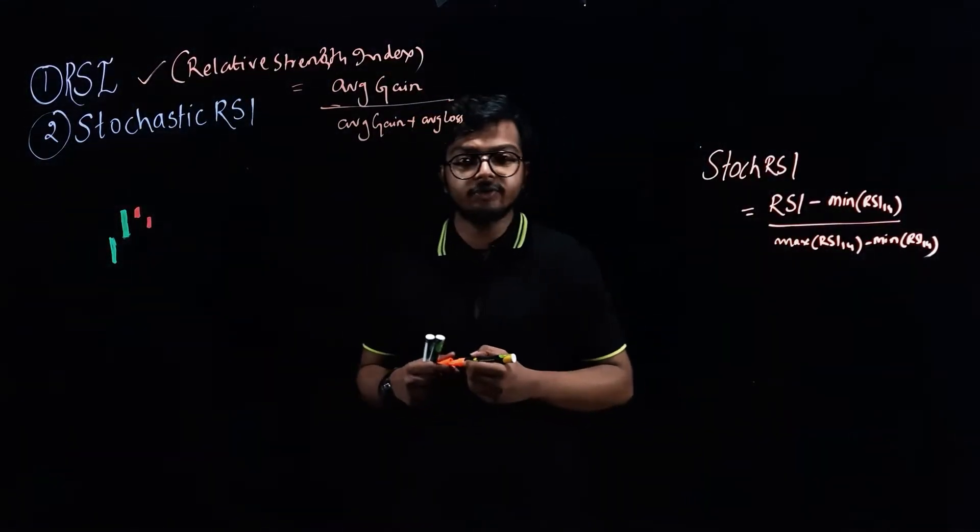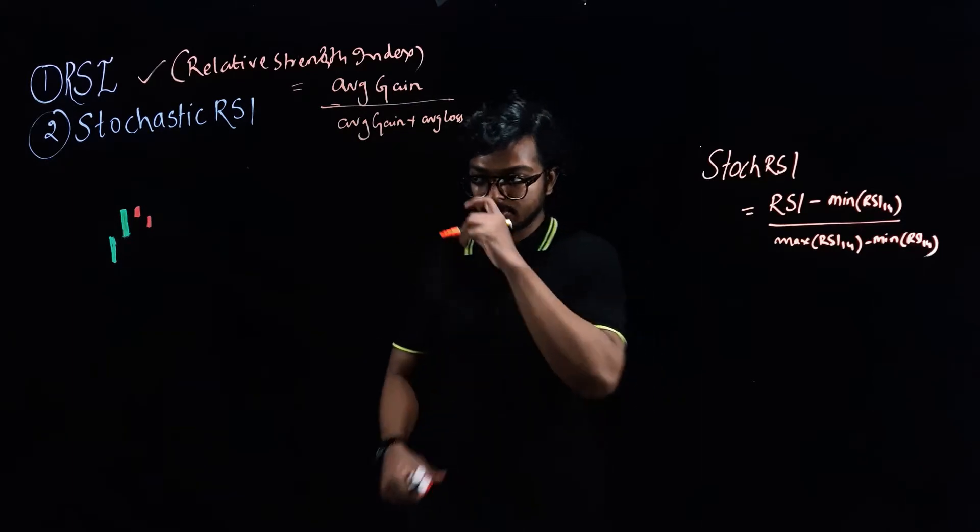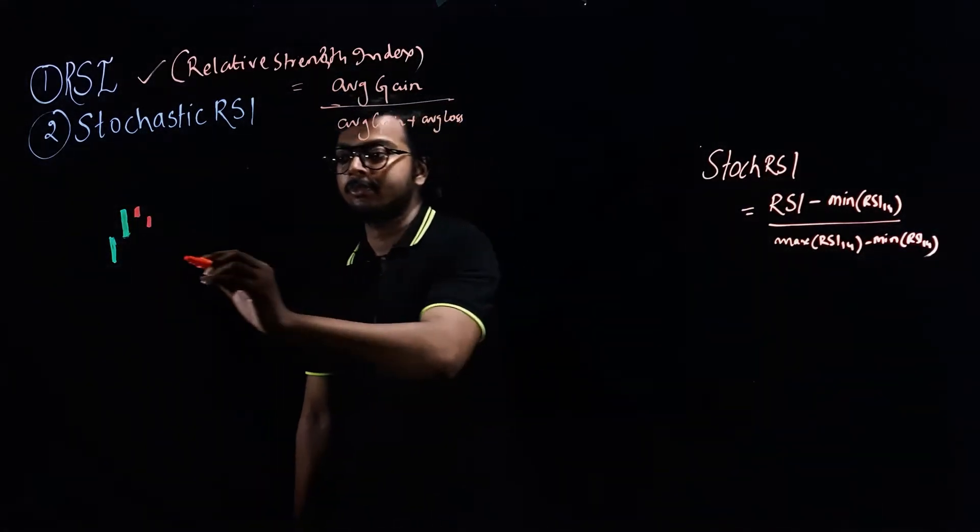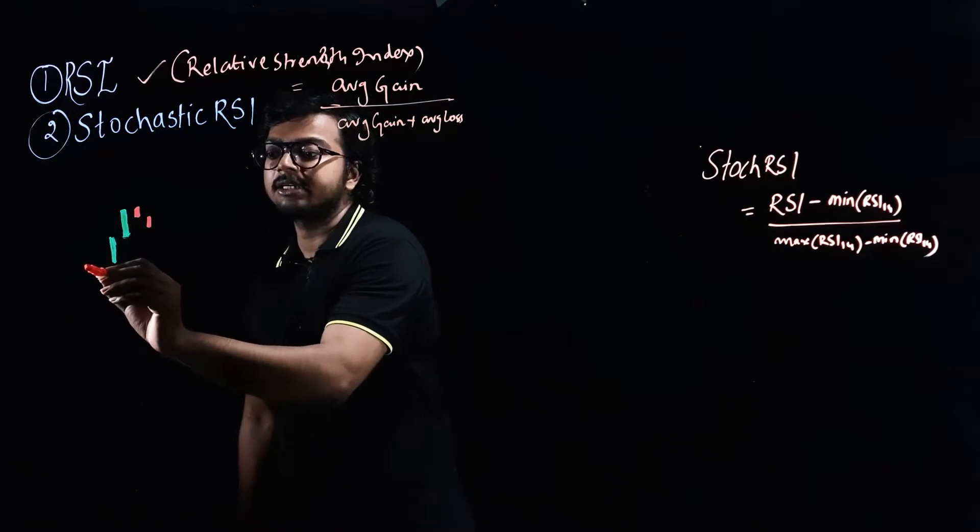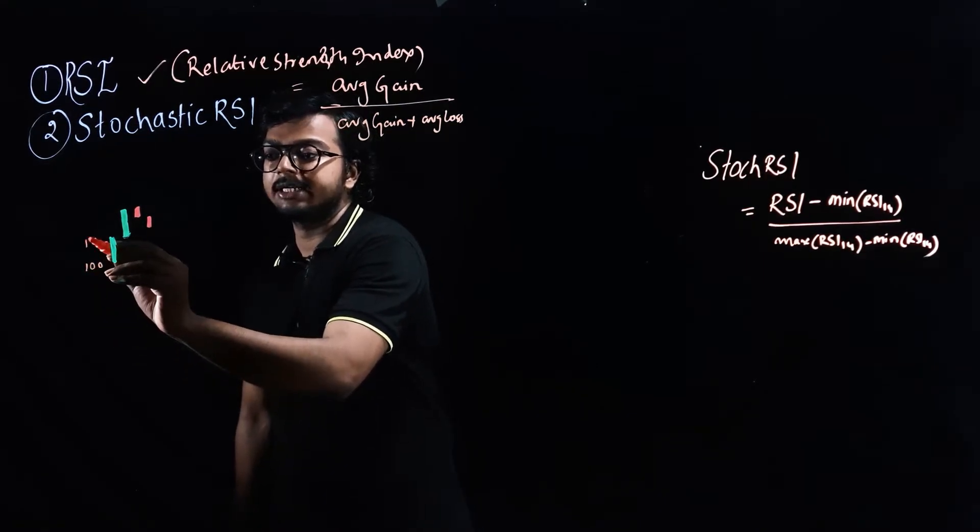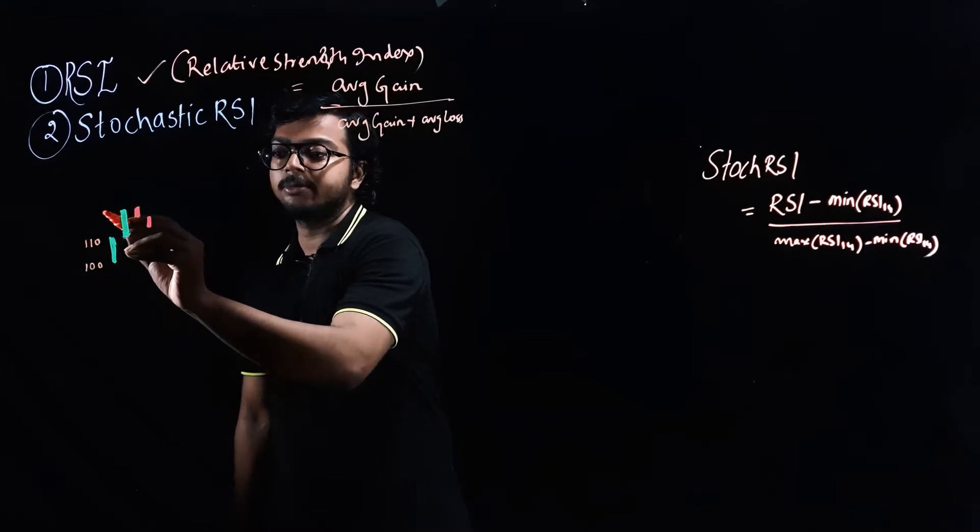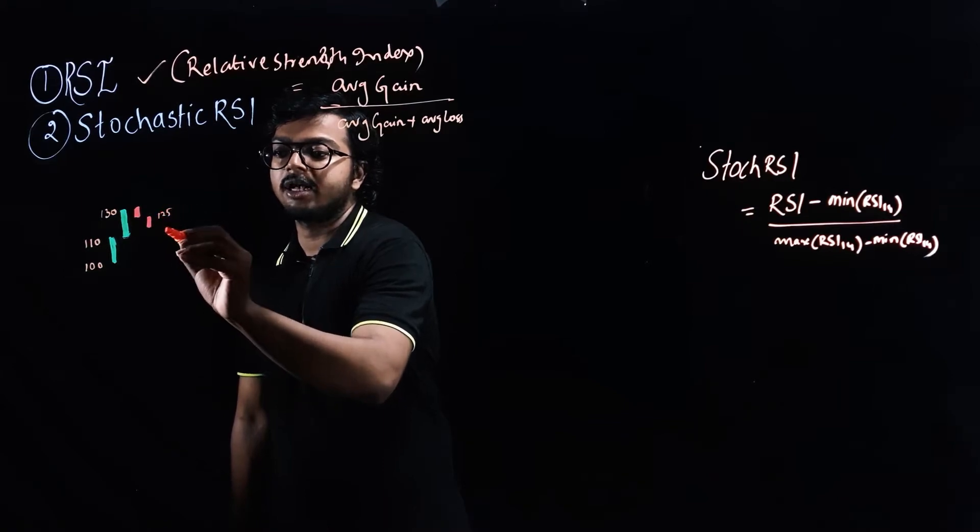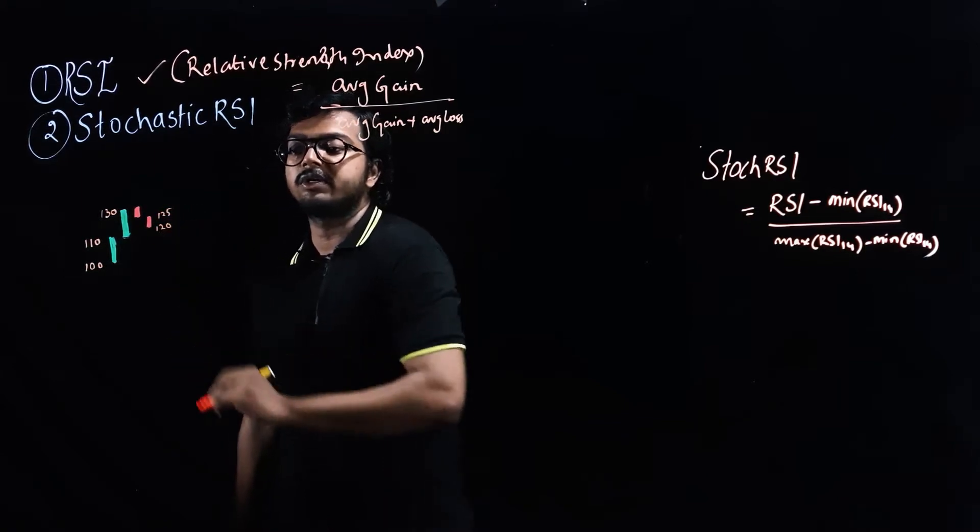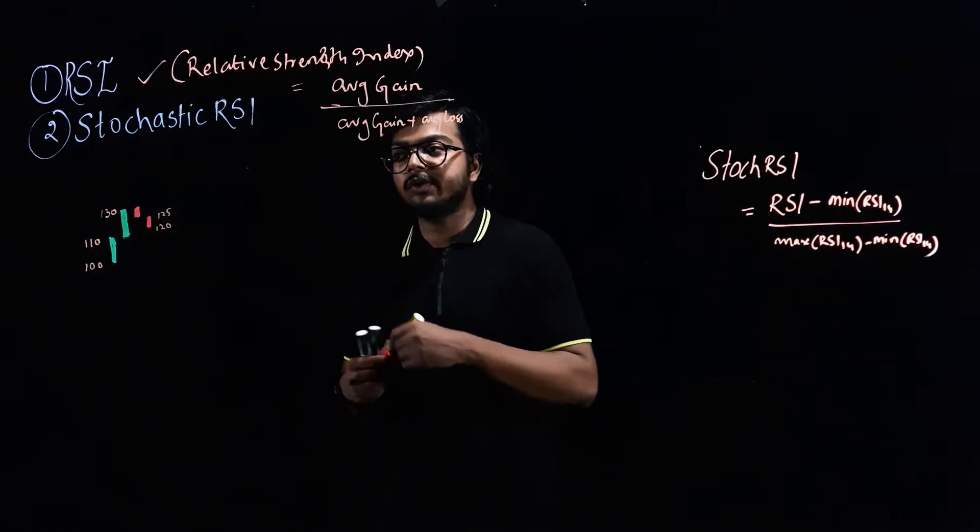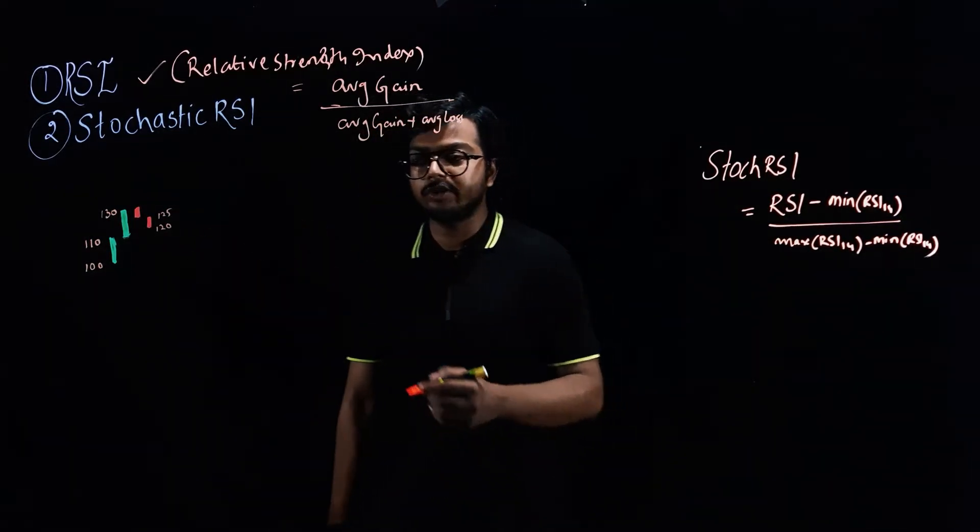Let's see how you can actually compute it. Say for example, you have these four candles. Here it started at 100, then it went up to 110, then it went up to 130, and then it fell to 125, and finally it halted at 120. So let's see how you can compute the RSI over here.